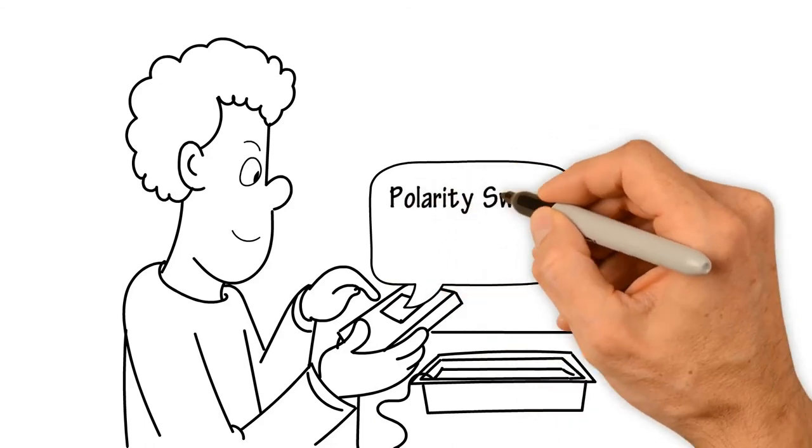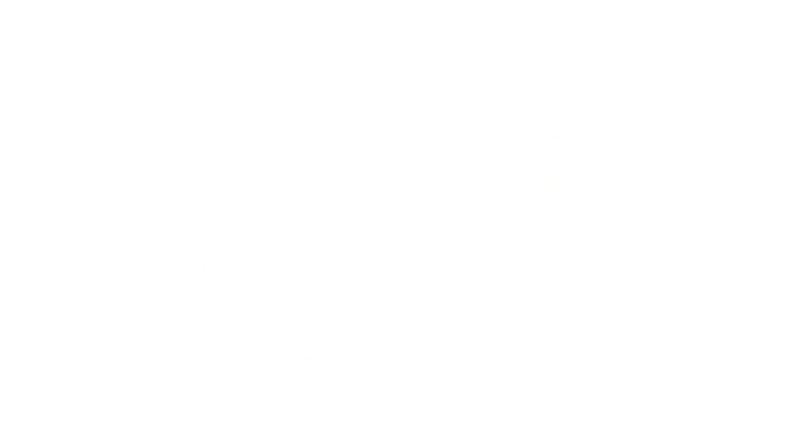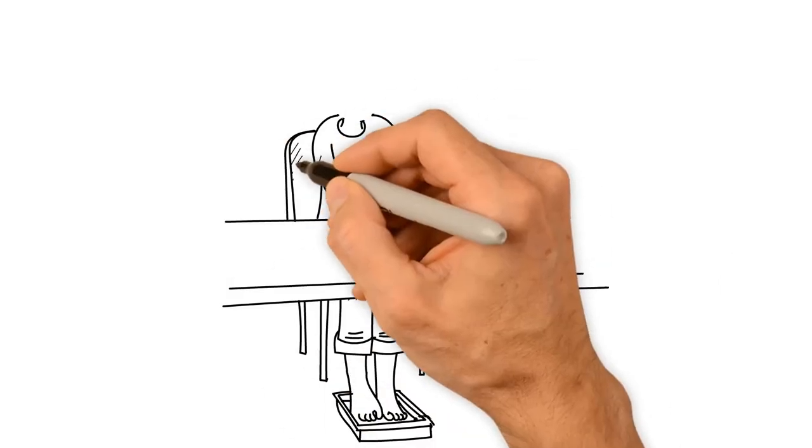Step 11: Set the polarity switch to auto. Step 12: Place both hands or both feet into the water bath trays.